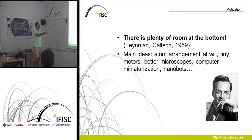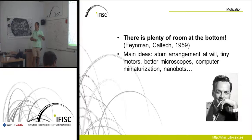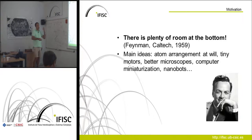Many of the ideas in Feynman's paper have since been put into practice. He talked about atom arrangement — people now know how to do that. He suggested tiny motors — there are now motors on the micron scale. He demanded better microscopy — we now have very powerful microscopes. He proposed computer miniaturization — since the late 1980s and early 1990s, there is now a huge field in quantum computation. The only thing people have not yet been able to build are nanobots.